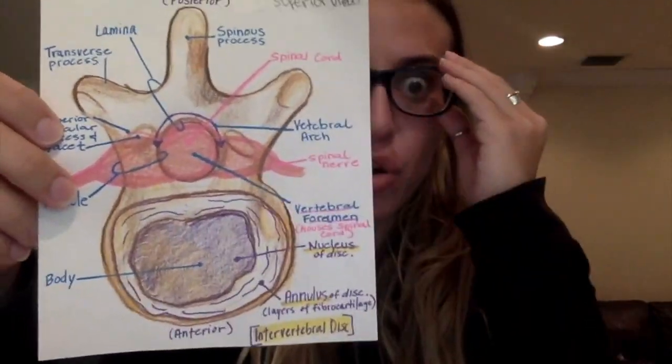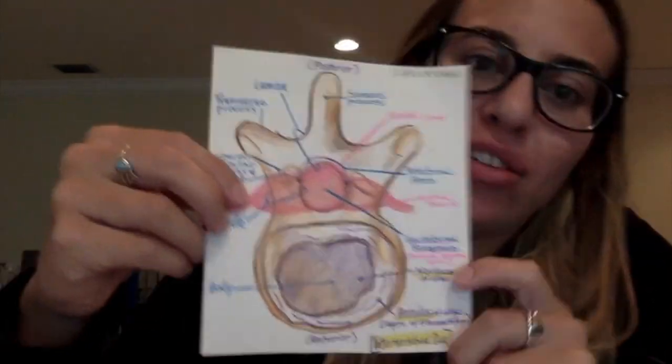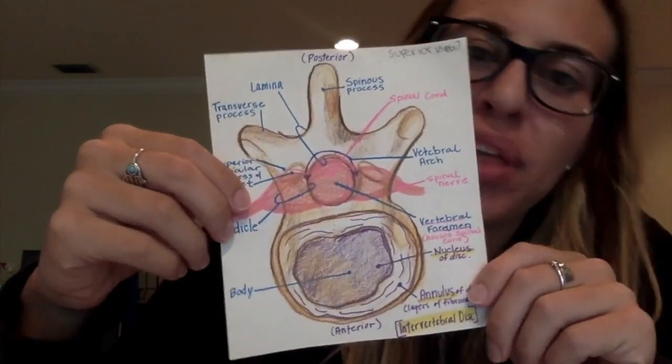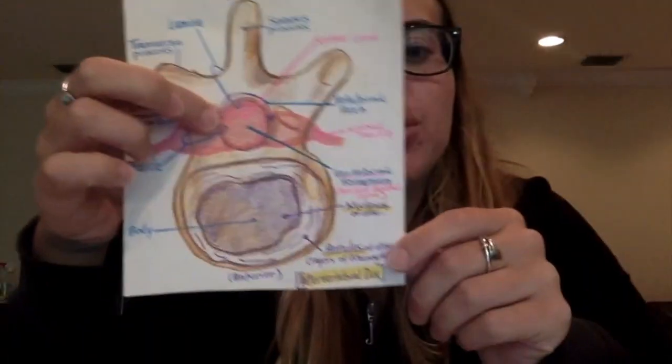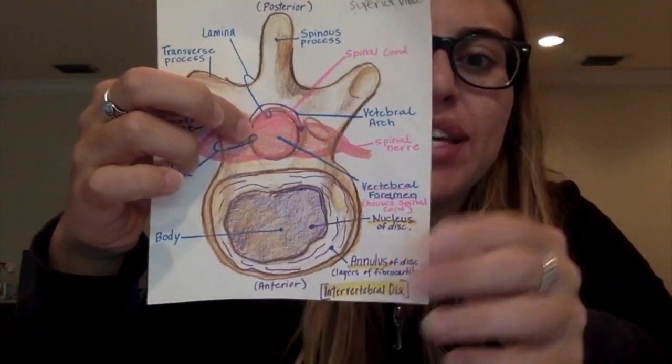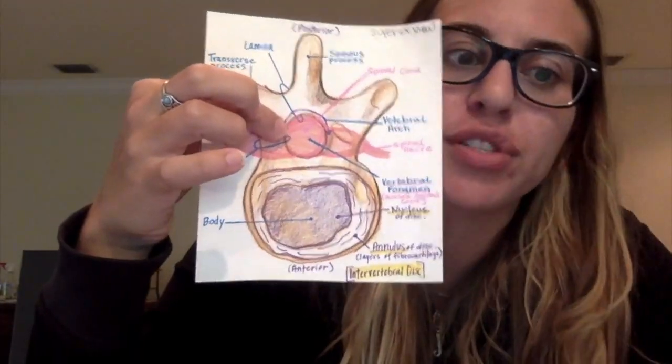All vertebrae have an opening known as the vertebral foramen, and together they form the spinal canal, which covers the spinal cord. The vertebral foramen houses the spinal cord, and it's the hole through which the spinal cord leaves the spinal column and turns into nerves.